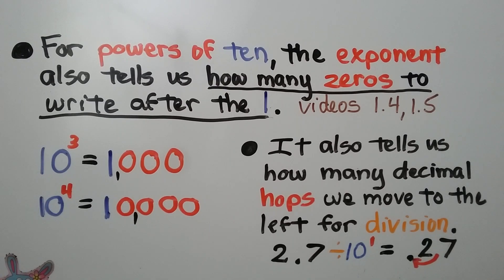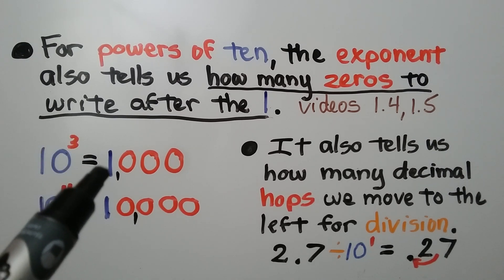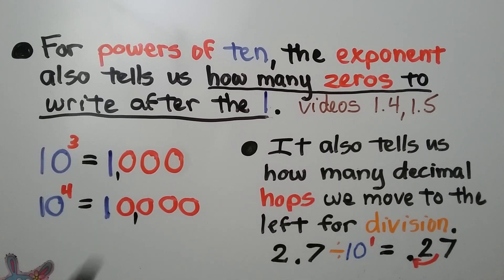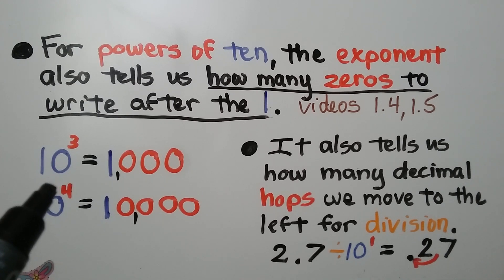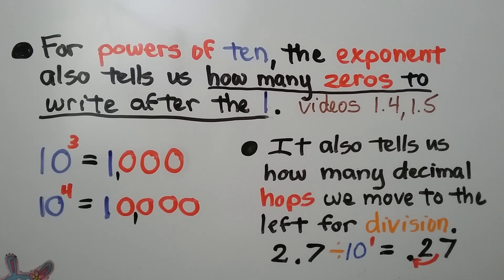For powers of 10, the exponent also tells us how many zeros to write after the 1. If we have 10 to the third power, we have a 1 with three zeros — it's 1,000. 10 to the fourth power, we have a 1 with four zeros — we have 10,000.